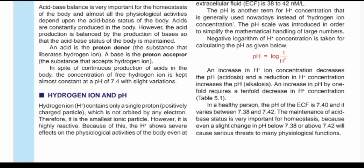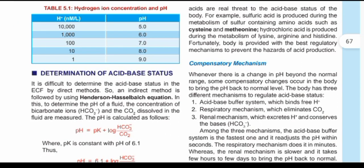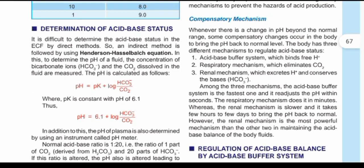The normal pH of plasma — also called extracellular fluid or the internal milieu — is 7.4, with a range of 7.38 to 7.42. It varies, so it's not a fixed single value.